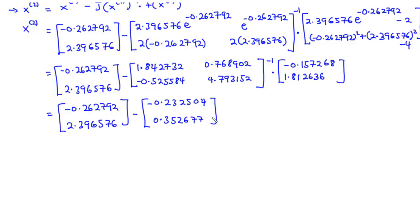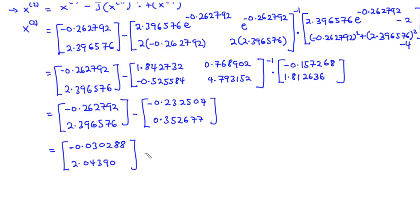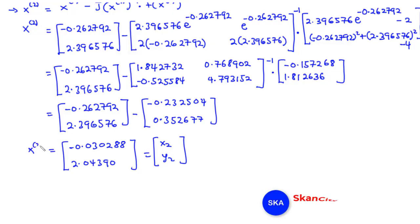Subtracting that product from x of 1, we finally obtain x of 2 equal to negative 0.0320288 and 2.043990. This is the solution at the end of the second iteration step.